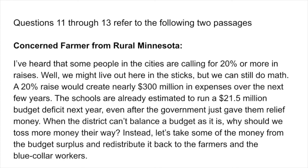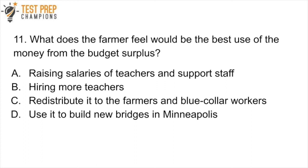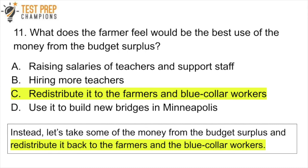Question 11: What does the farmer feel would be the best use of the money from the budget surplus? A. Raising salaries of teachers and support staff? B. Hiring more teachers? C. Redistribute it to the farmers and blue-collar workers? Or D. Use it to build new bridges in Minneapolis? Pause the video, try this, and then we'll go over it. The answer here is C — the farmer wants to redistribute it to the farmers and blue-collar workers, and this comes pretty much right out of the passage.